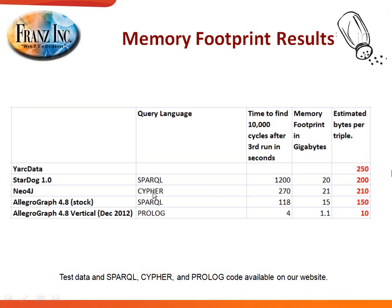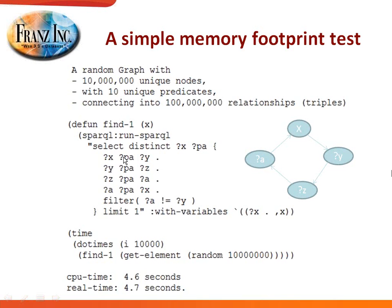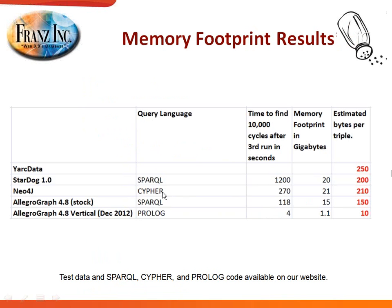In the comparison: Stardog took about 1,200 seconds for 10,000 cycles at about 200 bytes per triple and 20 gigabytes of memory. Neo4j, using a Cypher program, finished in 270 seconds at about 210 bytes per triple and 21 gigabytes. AllegroGraph 4.8 got to about 118 seconds at 15 gigabytes. And finally, our AIMS vertical solution using Prolog finished in just 4 seconds with a memory footprint no bigger than 1.1 gigabytes — roughly 10 bytes per triple. Take these numbers with a grain of salt; the SPARQL, Cypher, and Prolog code is available on our website if you want to try it yourself.